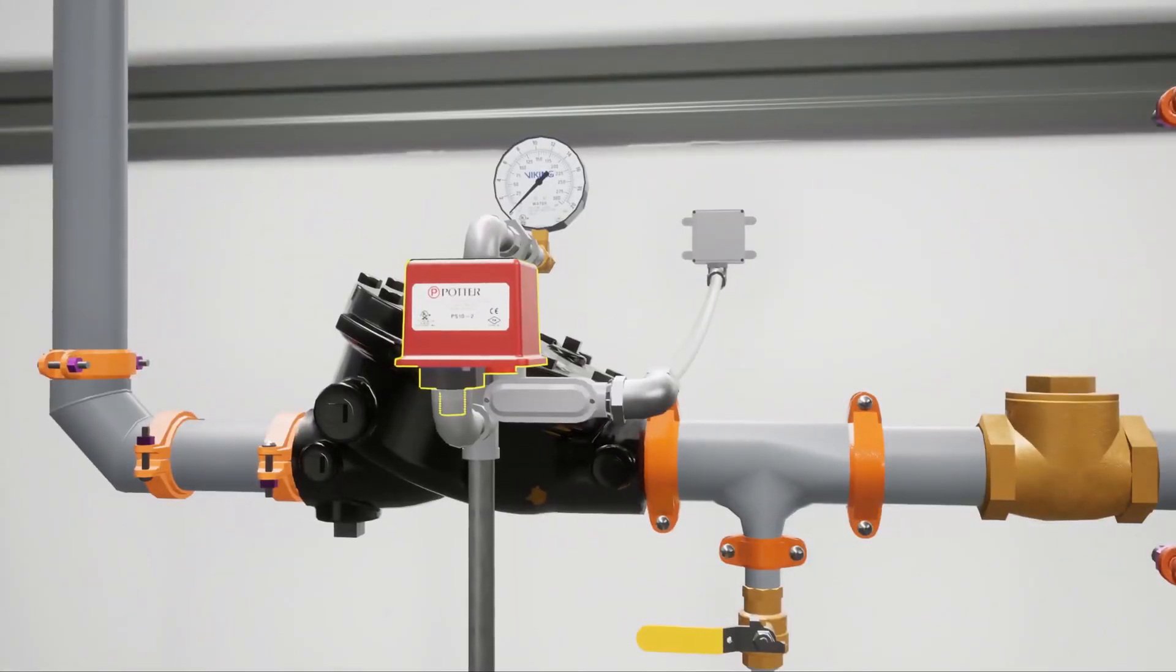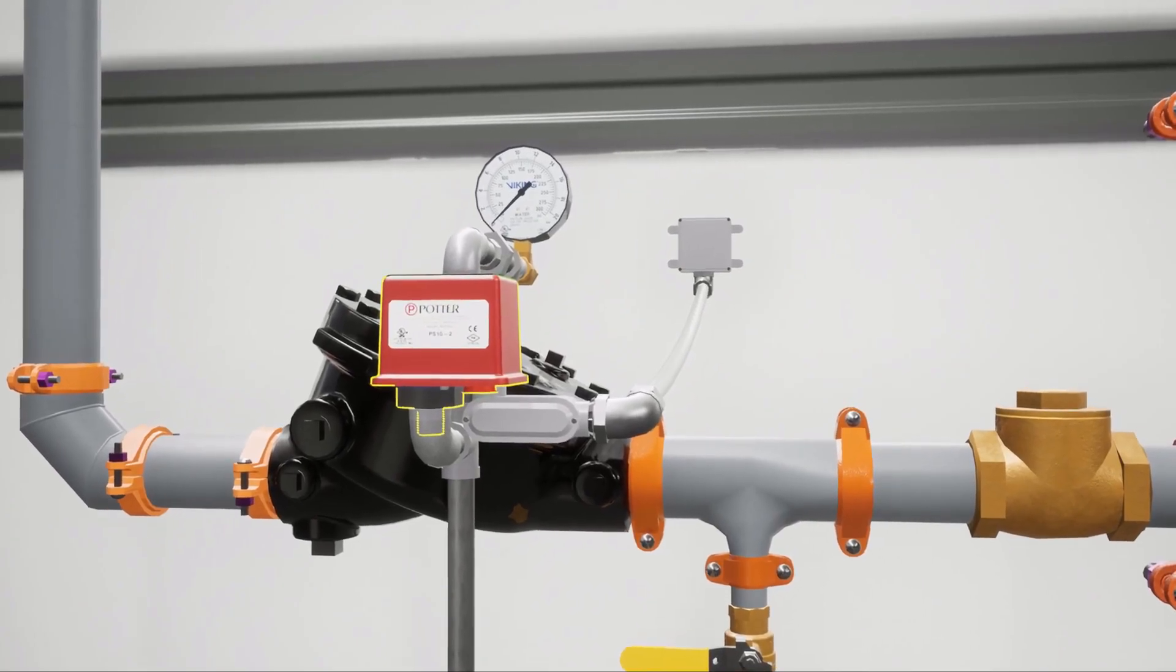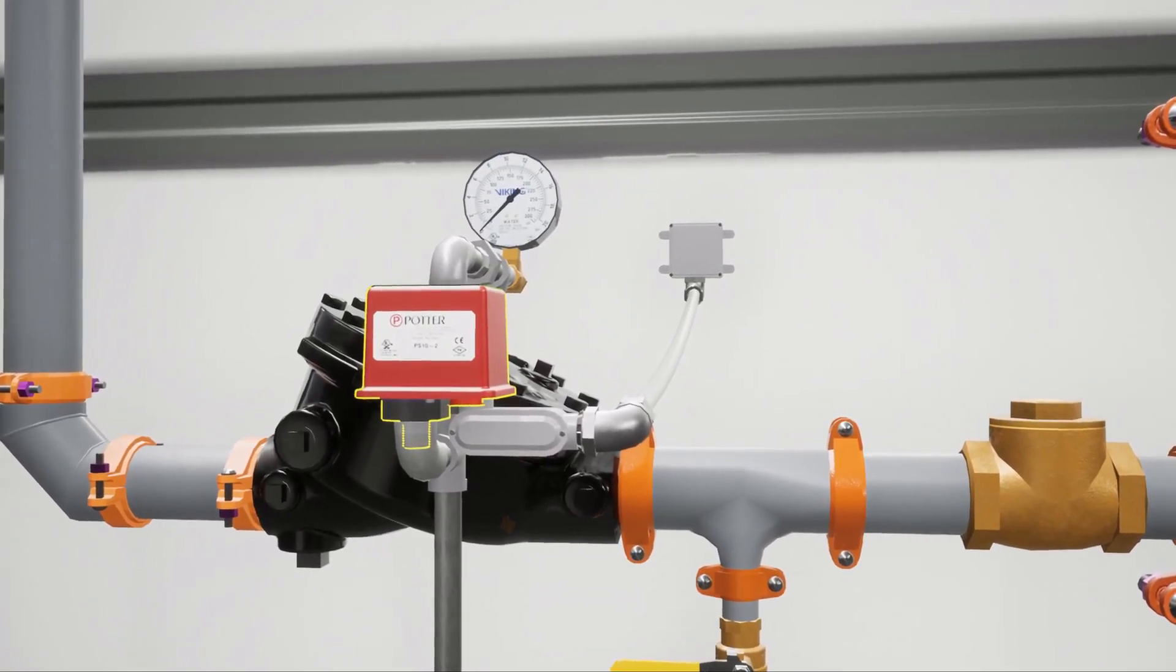The drop of prime pressure causes the priming line pressure switch to activate. Priming line pressure switches are required for Factory Mutual global approval.